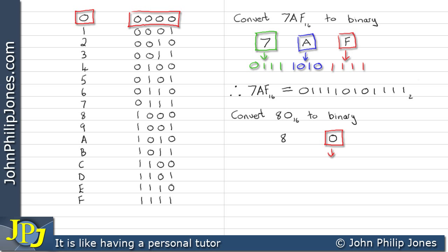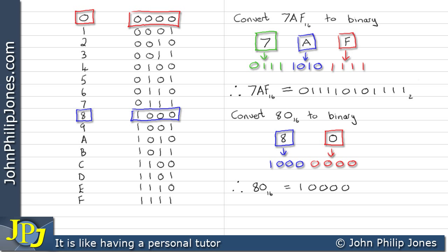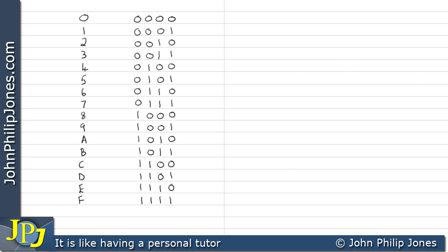Here's another example. Let's spread the eight and the zero out. We look for zero in the table — we can see it's four zeros, so we write that down. We look for the eight, which is here in the table and is that binary pattern, so we write that out. Consequently, 80 in hexadecimal is equivalent to the following binary number.